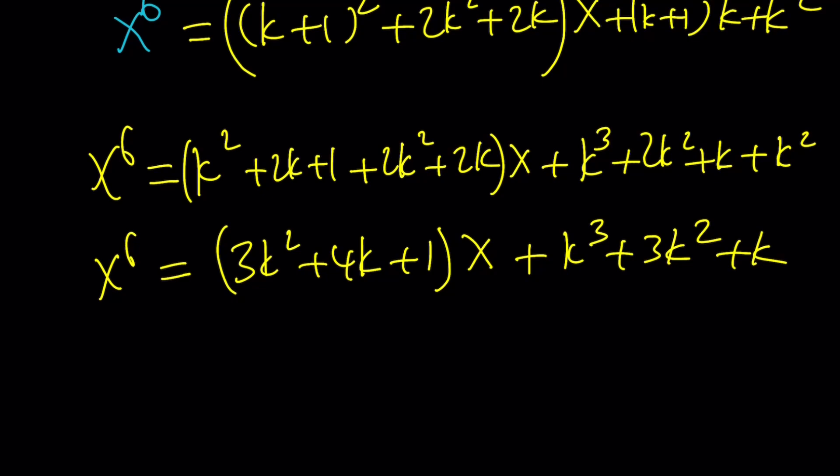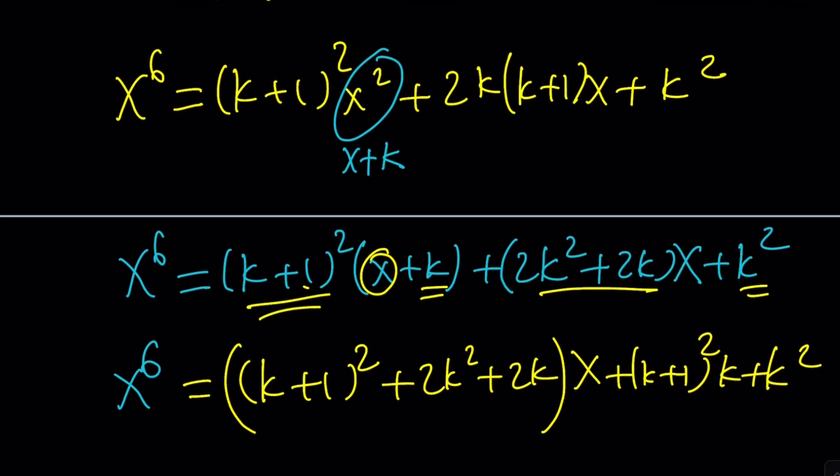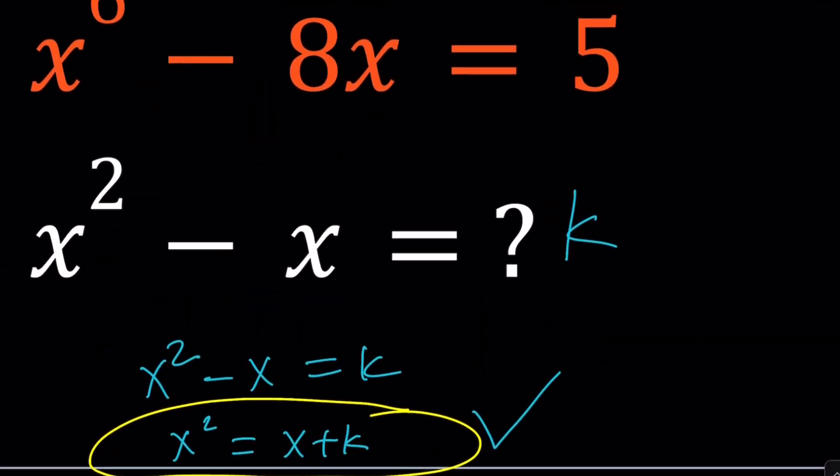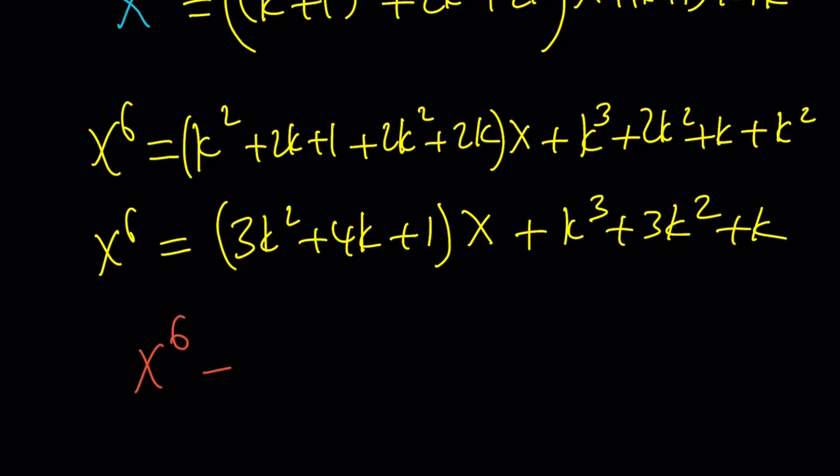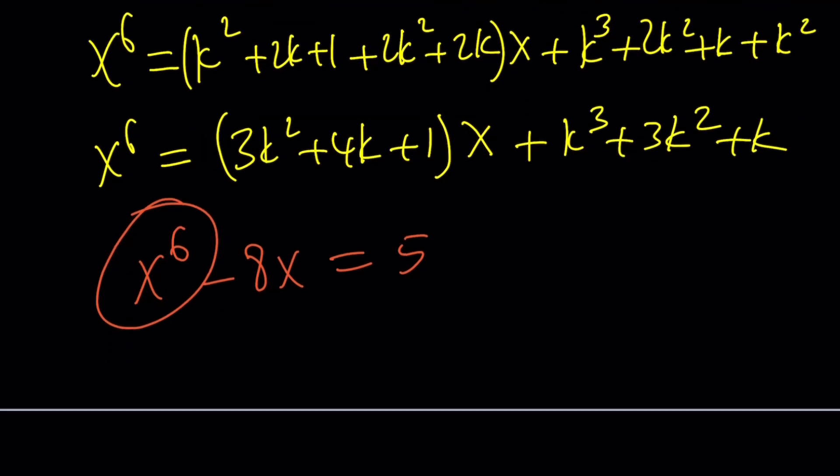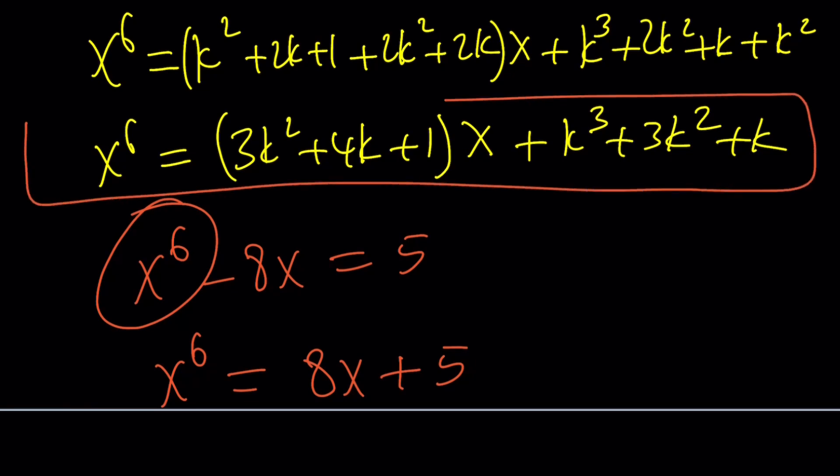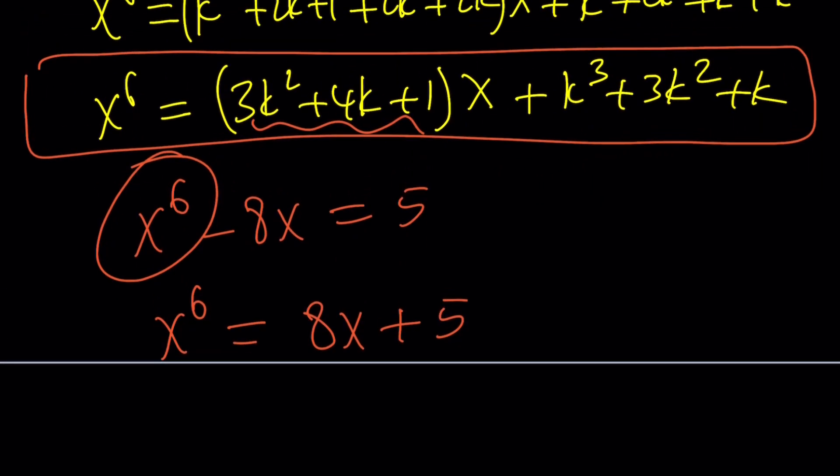Let's now set this equal to something. We were given x^6 - 8x = 5, which means x^6 = 8x + 5. But I also got x^6 in terms of k and x. So I can set these two polynomials equal to each other. This gives us two equations. Let's set the coefficient of x equal to 8, and the constant term equal to 5.